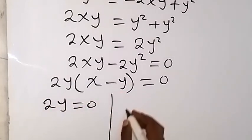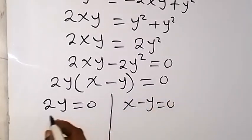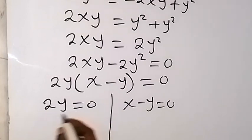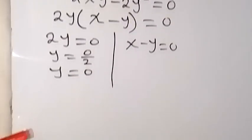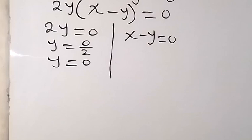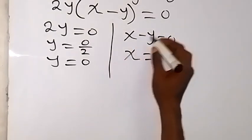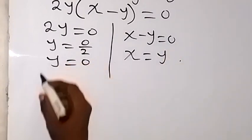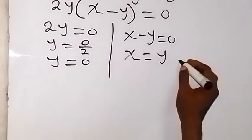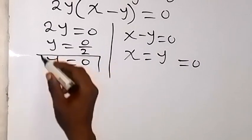When we equate each factor to 0, we get either 2y = 0 or x minus y = 0. Dividing by 2 gives y = 0. From x minus y = 0 we get x = y, and since y = 0, that means x = 0 as well. So our solution is x = y = 0.